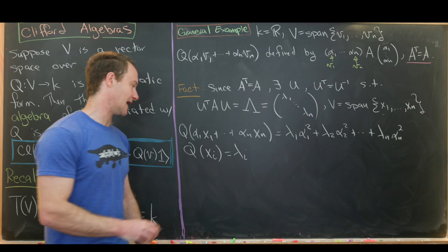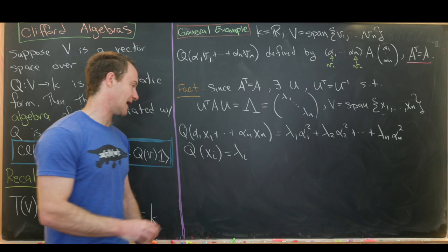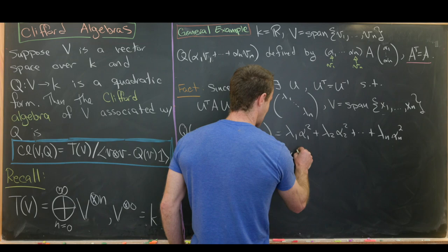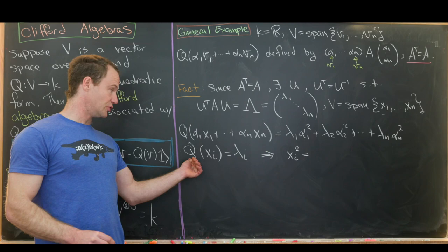That gives us a good piece of information: inside the Clifford algebra, we know how to multiply xᵢ with itself. So xᵢ² equals Q evaluated at xᵢ, which in this case is λᵢ.